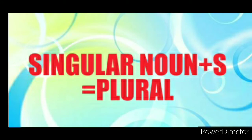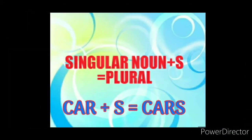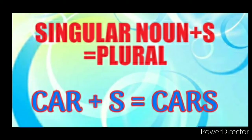पहले मैं आपको ये सिखाऊंगा कि plus S add करने से — मतलब S को अगर हम किसी noun पे add करते हैं, तो वो plural हो जाता है. लेकिन हर किसी में नहीं होता. जैसे car plus S equal to cars. Car एक noun है — noun मतलब किसी भी चीज़ का नाम होता है. तो car के पास अगर हम S add करते हैं, तो cars हो जाते हैं. Car मतलब एक car, यानि कि singular, और cars मतलब बहुत सारे cars — वो plural है.